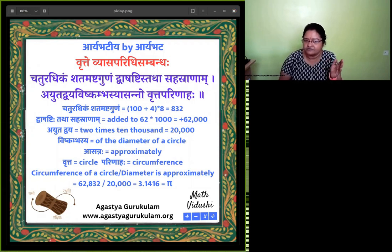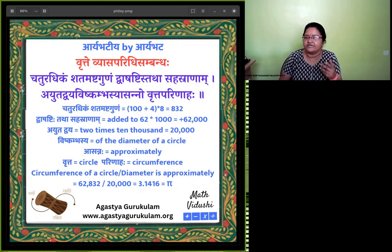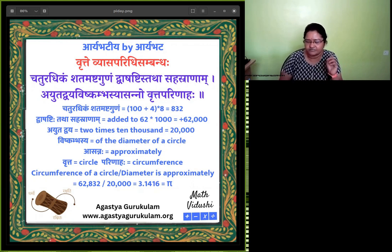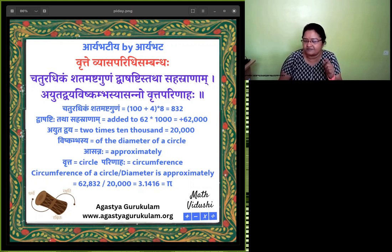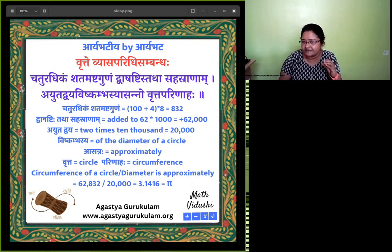Ayutadvaya: Ayuta is 10,000 and Dvaya means 2 times, so you get 20,000. Vishkambhasya means 'of the diameter of the circle.' Asannaha means approximately — please note this point. He says it is approximate.